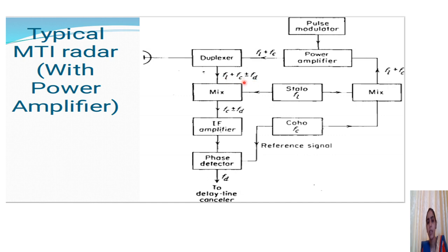The received echo signal FL plus FC plus or minus FD is mixed in a mixer along with the stable local oscillator signal FL. The output of the mixer is the difference, so the FL value cancels and we get only FC plus or minus FD.